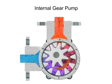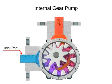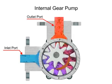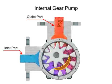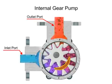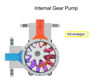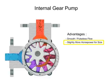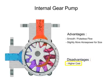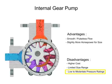Liquid is trapped in the gear spaces and carried from the inlet to the discharge. A stationary crescent-shaped divider separates the intake and discharge portions of the fluid. Advantages of internal gear pumps are a smooth and almost pulseless flow and slightly more horsepower for its size. Disadvantages are its higher cost, limited size range, low to moderate pressure ratings, and few sources of manufacture.